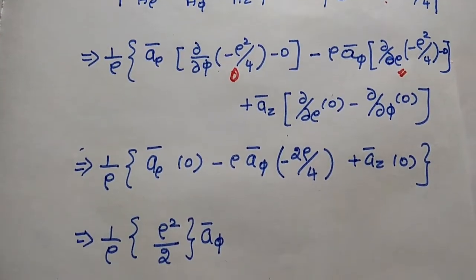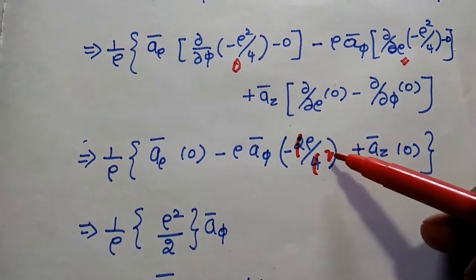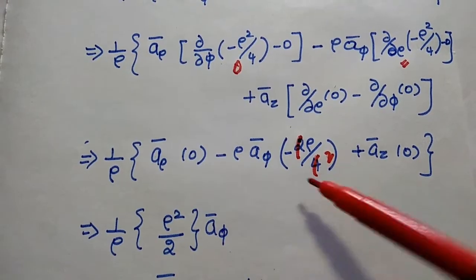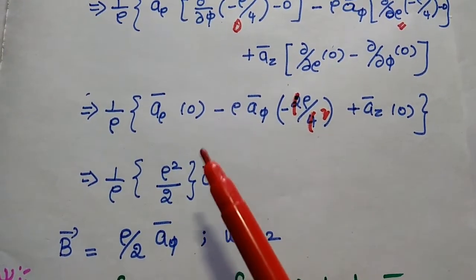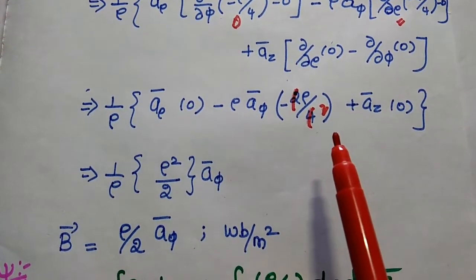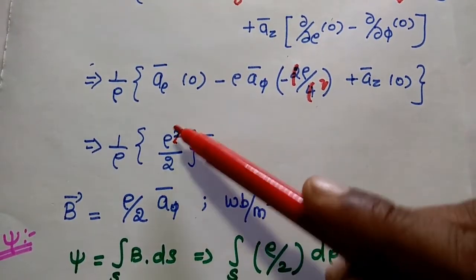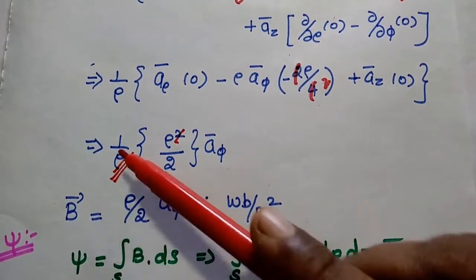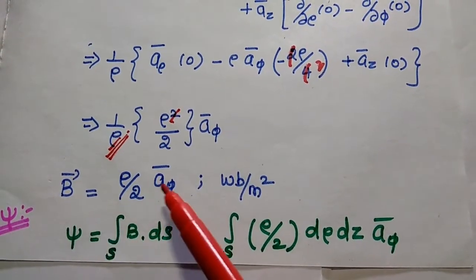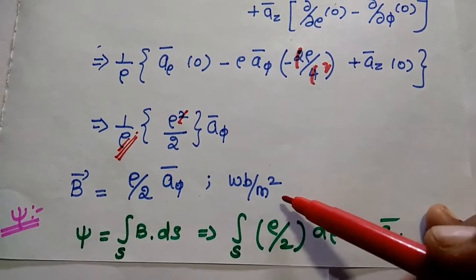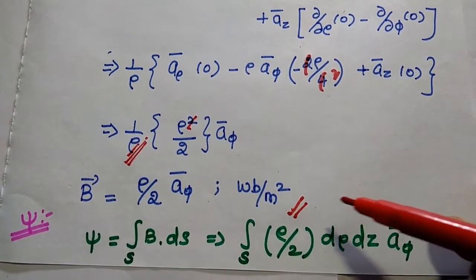Simplifying further: we get minus ρ by 2. Multiplying minus ρ inside gives 1/ρ times ρ²/2 âφ. The a_ρ and az components are 0. Simplifying, the magnetic flux density B vector equals ρ/2 âφ, with units of Weber per meter squared.